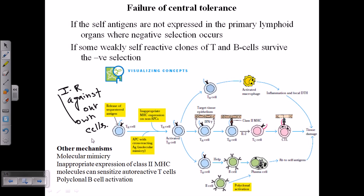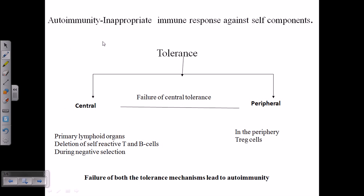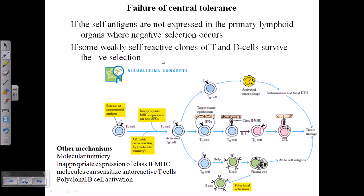Failure of central tolerance can occur in three or four ways. First, it could be molecular mimicry. Second, it could be inappropriate expression of class 2 MHC molecules. During T cell development in the thymus and B cell development in the bone marrow, if MHC molecules are not expressed correctly, there is nothing to showcase self and non-self molecules to the T or B cells, leading to central tolerance failure.